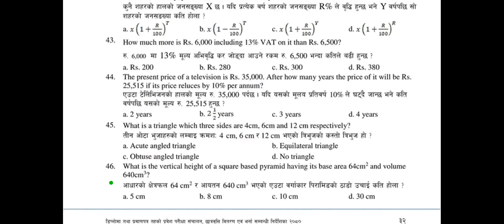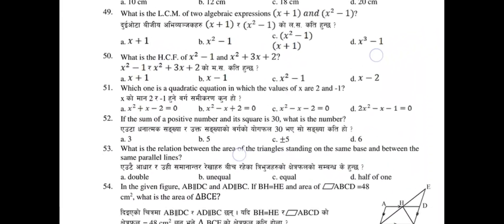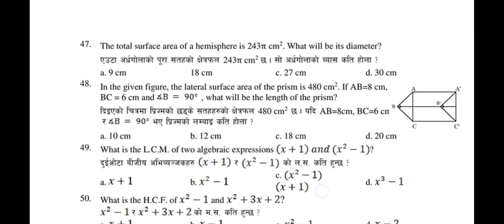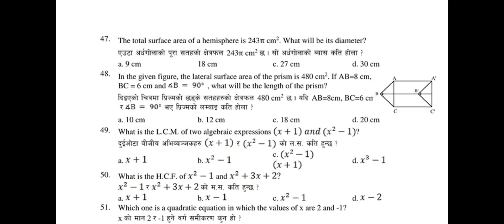The answer to question 46 is selected. Moving on — question 47: The total surface area (TSA) of a hemisphere is 243π cm². What will be its diameter? The answer for question 47 is 6.